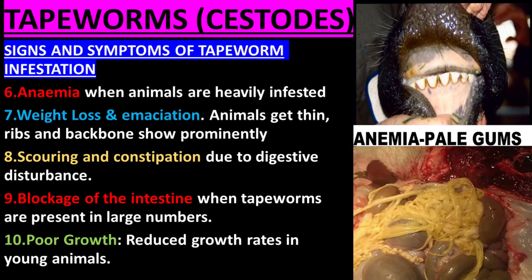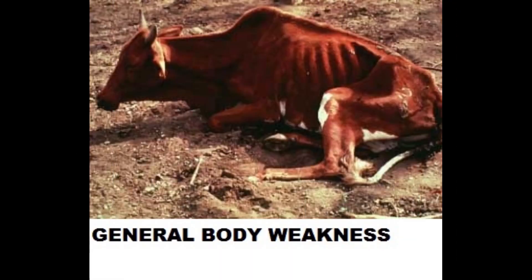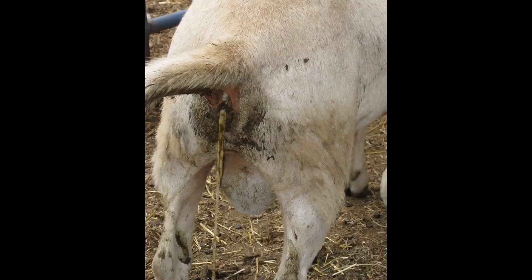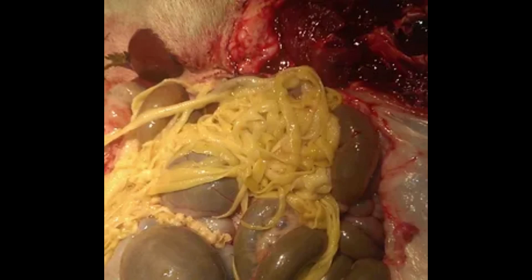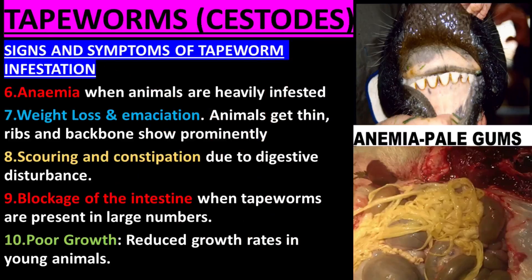Anemia when animals are heavily infested. Weight loss and emaciation — animals get thin, ribs and backbones show prominently. Scouring and constipation due to digestive disturbance. Blockage of the intestine when tapeworms are present in large numbers. Poor growth — reduced growth rates in young animals.